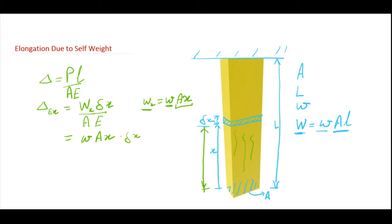Into delta x from the above formula, only A into E. So from here A will get cancelled and this comes out to be w x delta x by E. So this is the extension for a small section of length delta x.